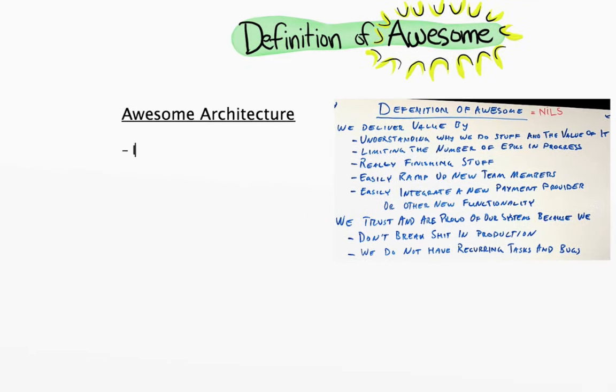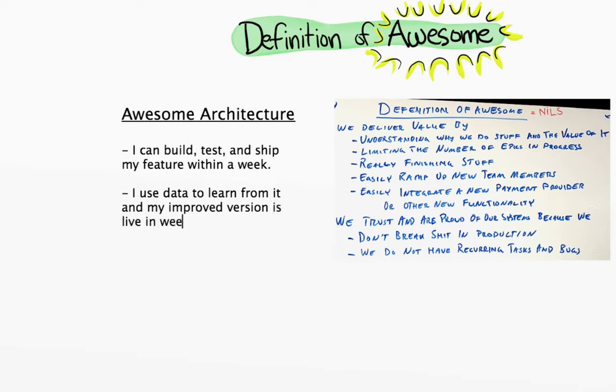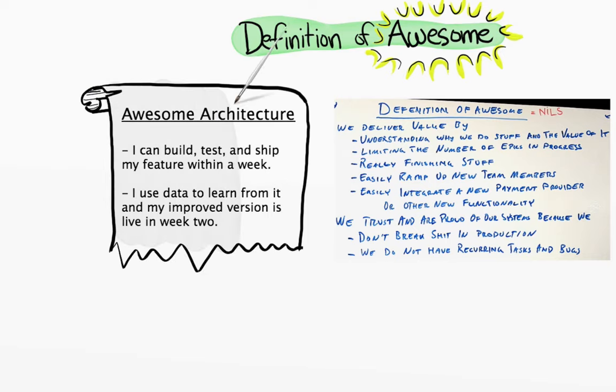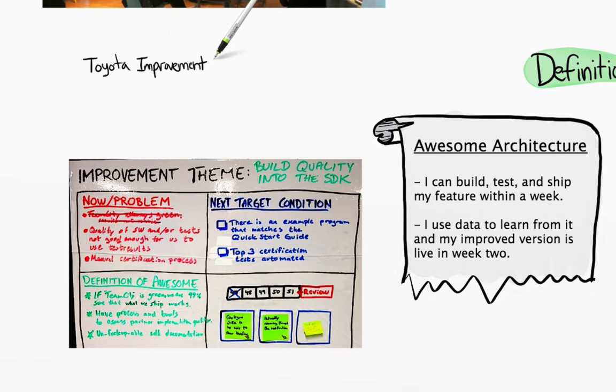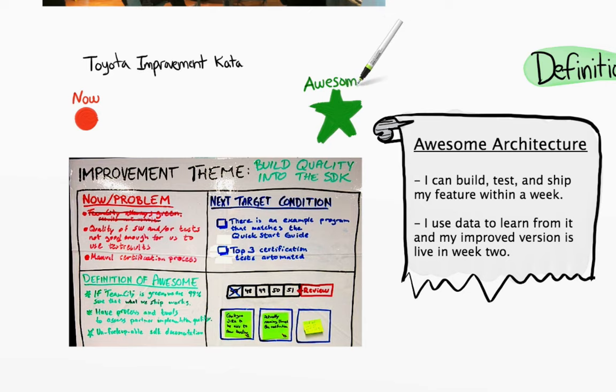And our definition of awesome architecture includes I can build, test, and ship my feature within a week. I use data to learn from it, and my improved version is live in week two. Awesome is a direction, not a place. So it doesn't always have to be realistic. But if we can agree on what awesome would look like, it helps focus our improvement efforts and track progress. Here's an example of an improvement tracking board, inspired by a technique called Toyota Improvement Kata. Top left shows what is the current situation. In this case, the squad was having quality problems. Bottom left shows definition of awesome. In a perfect world, we'd have no quality problems at all. Top right is a realistic target condition. If we were one step closer to awesome, what would that look like? And finally, the bottom right shows the next three concrete actions that will move us towards the target condition. As these get done, new actions are identified by the squad. Boards like this live on the wall in the squad room, and are typically followed up at the next retrospective.